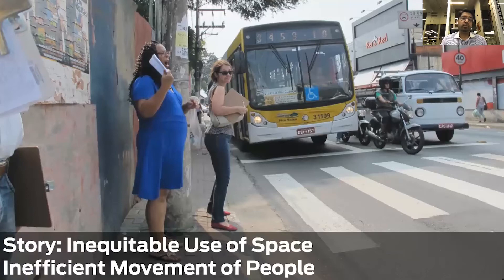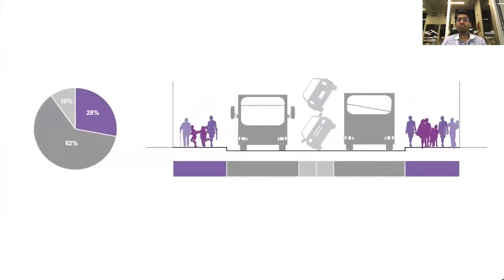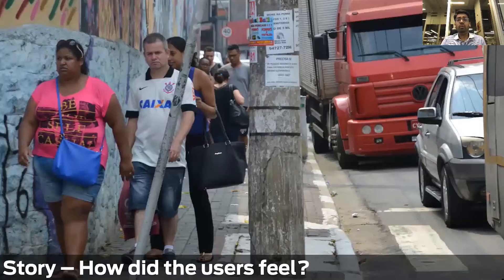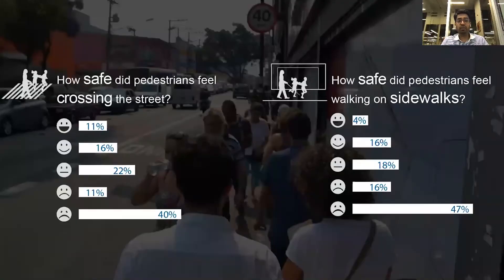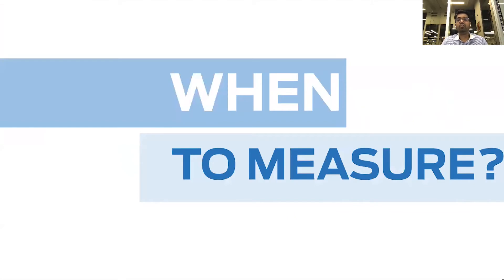When talking about inequitable user space, when a large number of people are actually pedestrians on a corridor but majority of the space has been given to cars and buses, we need to show how we can repurpose that space and prioritize pedestrians. We often need to go out and understand from people how they feel on the streets and share their stories — talk about how safe or unsafe they feel walking on those sidewalks. Then we pick the metrics with the highest potential: the metric where we can show the greatest change, the extreme condition, and have the largest impact.